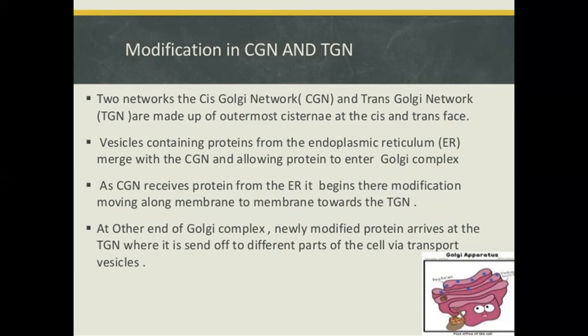The two networks of the Golgi are the cis-Golgi network (CGN) and the trans-Golgi network (TGN). Vesicles containing proteins from the endoplasmic reticulum merge with the CGN, allowing proteins to enter the Golgi complex. As the CGN receives proteins from the ER, it begins their modification, moving along membrane to membrane towards the TGN. At the other end of the Golgi complex, newly modified proteins arrive at the TGN, where they are sent off to different parts of the cell via transport vesicles.